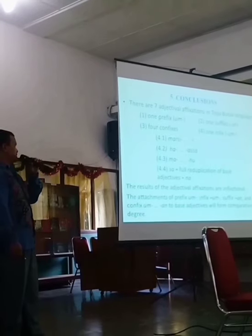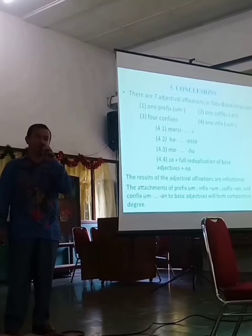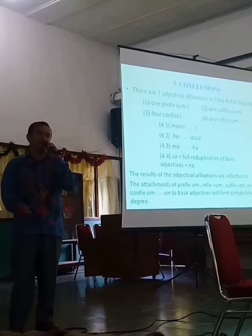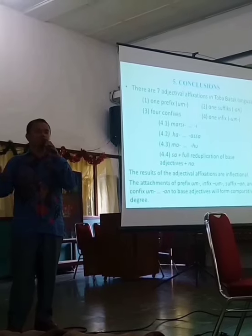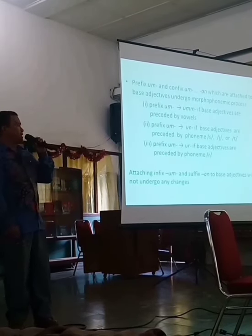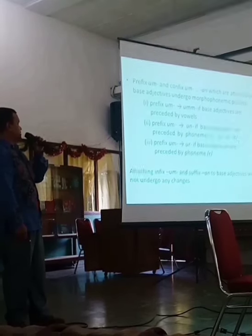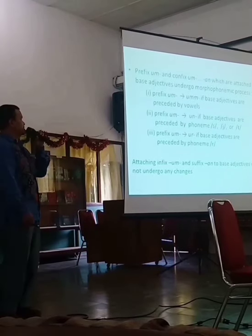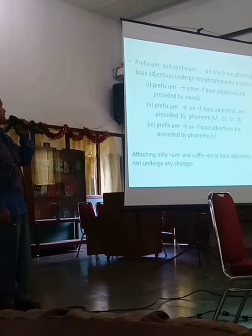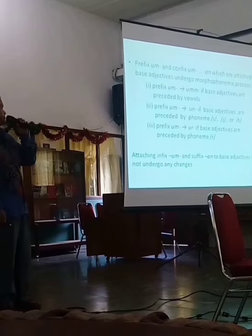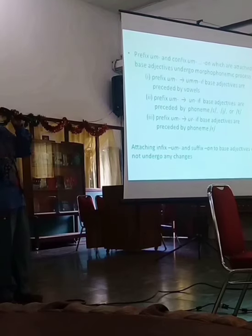The attachment of prefix 'um,' infix 'um,' suffix 'an,' and confix 'um-an' to base adjectives will form comparative forms — like 'bulgar' meaning 'bigger,' 'metekan' meaning 'smaller,' 'umbaga' meaning 'more beautiful,' etc. And finally, prefix 'um' and confix 'um-an' attached to base adjectives undergo morphophonological processes: 'um' becomes 'um' with double M, 'um' becomes 'un,' 'um' becomes 'ur,' with their variations. Attaching prefix 'um' and suffix 'an' to base adjectives does not undergo any change. That is all of my presentation. Thank you very much.